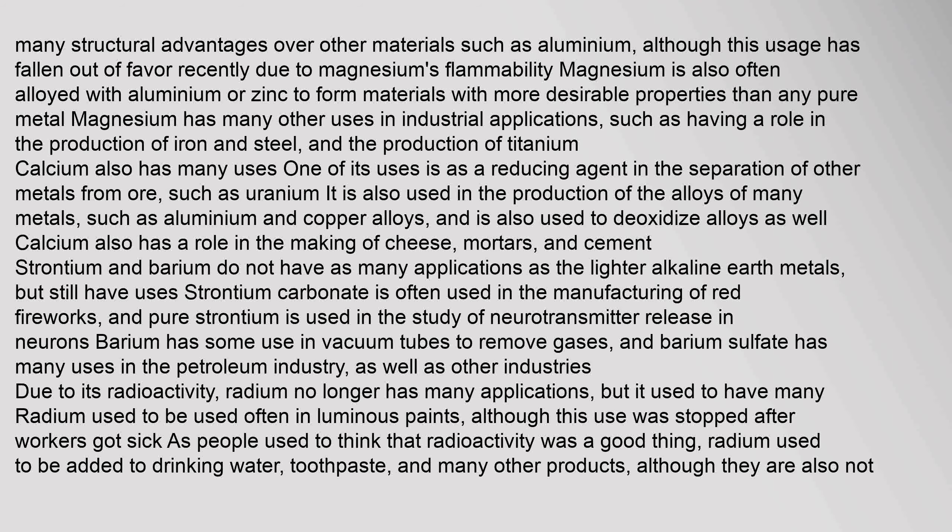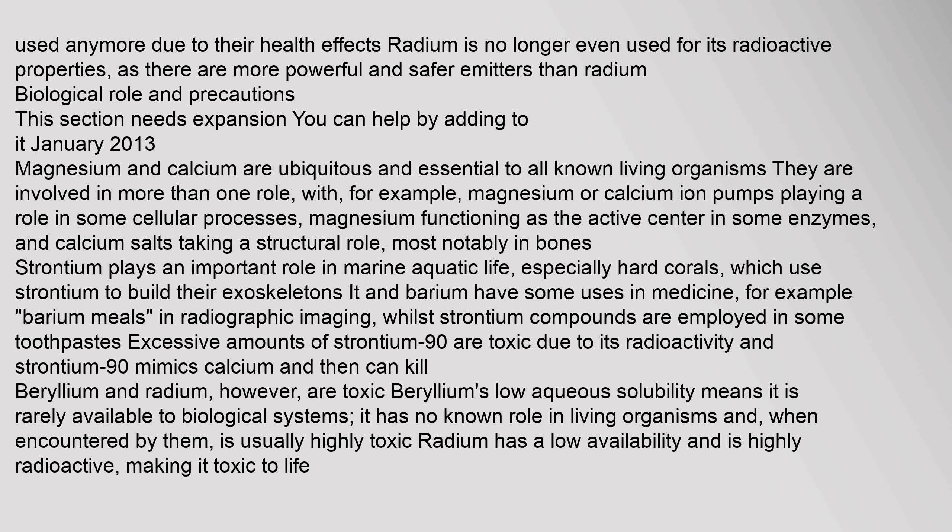Strontium and barium do not have as many applications as the lighter alkaline earth metals, but still have uses. Strontium carbonate is often used in the manufacturing of red fireworks, and pure strontium is used in the study of neurotransmitter release in neurons. Barium has some use in vacuum tubes to remove gases, and barium sulfate has many uses in the petroleum industry. Due to its radioactivity, radium no longer has many applications. Radium used to be used in luminous paints and was added to drinking water and toothpaste, but these uses were stopped after health effects became known. Radium is no longer used even for its radioactive properties, as there are more powerful and safer emitters available.